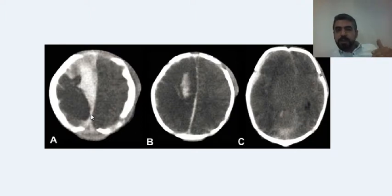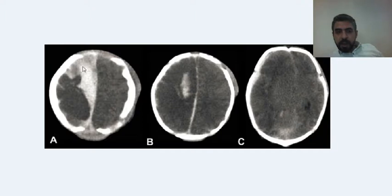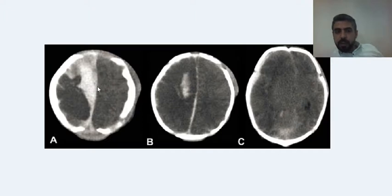Epidural hematomas usually have a lens shape. Here the blood is crossing a coronal suture. When blood is in the subdural space, it will not cross the falx, because the falx acts as a natural barrier. So this indicates that this is a subdural hematoma. Sometimes it's not that easy to differentiate between subdural and epidural hematomas.